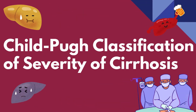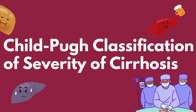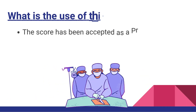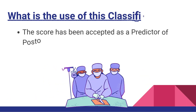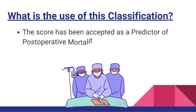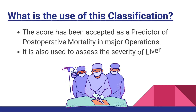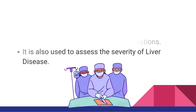Child-Pugh Classification of Severity of Cirrhosis. The score has been accepted as a predictor of postoperative mortality in major operations. It is also used to assess the severity of liver disease.